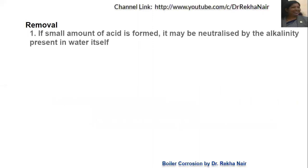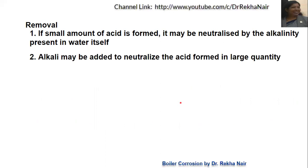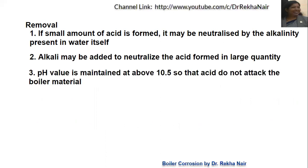For removal of acids, if there is a small amount of acid present, we can add some alkali to neutralize it in the water. If acid is formed in large quantities, alkali may be added to neutralize it. The pH is maintained at about 10.5 so that acid does not attack the boiler material. Maintaining this alkaline pH above 7 ensures acidity will not be a problem.